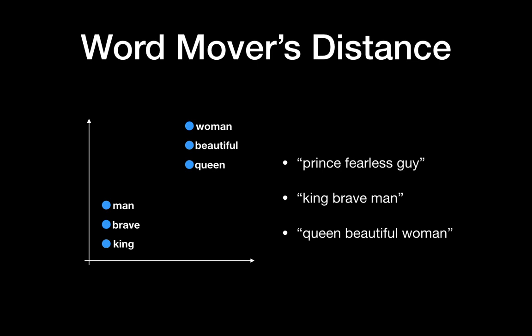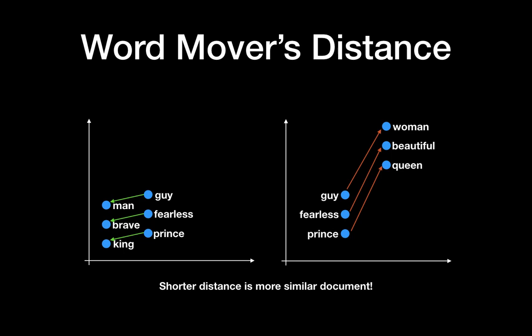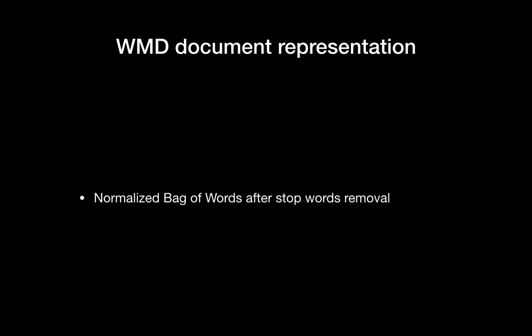Let's see Word Mover's Distance, WMD. We have three documents here: 'Prince Fearless Guy', 'King Brave Man', and 'Queen Beautiful Woman'. You can see that 'Prince Fearless Guy' is similar to 'King Brave Man'. You can see the distance here — a smaller distance means higher similarity. This is the basic idea of WMD.